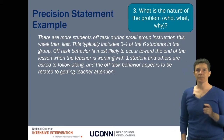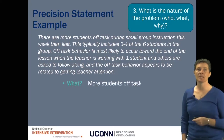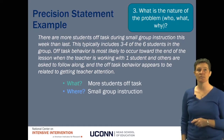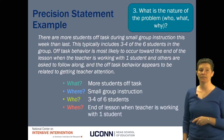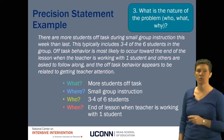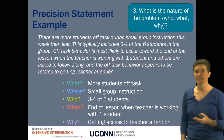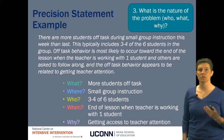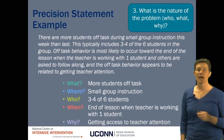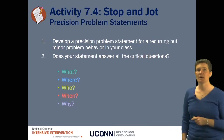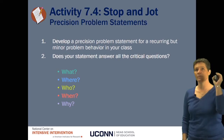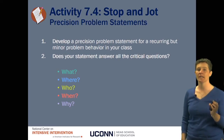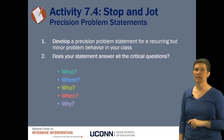Let's take a look at what that example tells us: more students are off task, it's happening during small group instruction, three or four out of six students are involved, it happens more often at the end of the lesson when the teacher is working one-on-one with a student, and it hypothesizes that the reason is the student is looking to get access to teacher attention. It gives us a lot of information to work with. In your workbook, develop a precision problem statement for a recurring but minor problem behavior in your class. Generate information to answer: what is the behavior, where is it happening, who's involved, when, and why do you think it continues to happen? Take a minute to do that and we will come back together for part four.